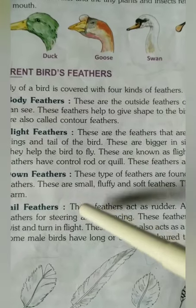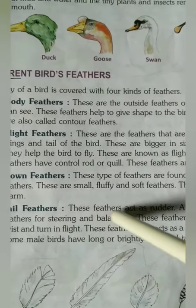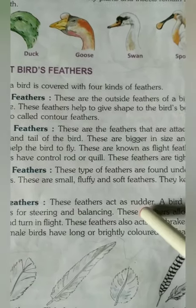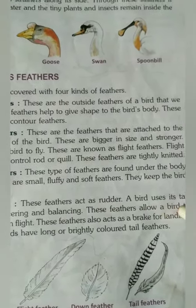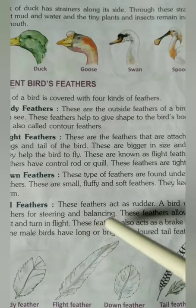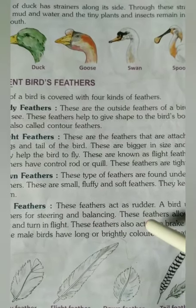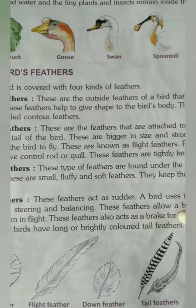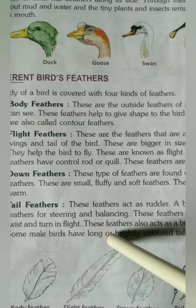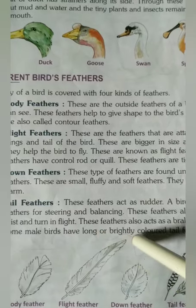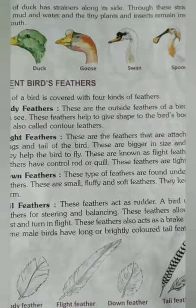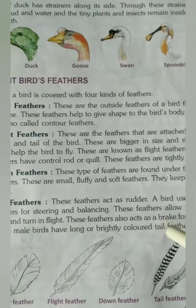The next one is tail feathers. These feathers act as a rudder — meaning they control the movement of a bird. A bird uses its tail feathers for steering and balancing. These feathers allow a bird to twist, turn, and fly, and they also act as a brake for landing.